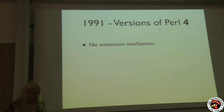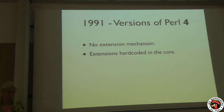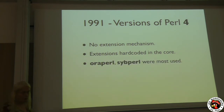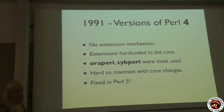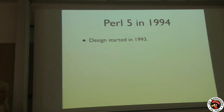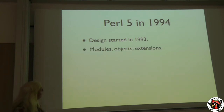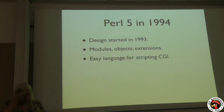People might argue that Perl 4 is actually Perl 3 with a book. But things got a bit heavier. Perl 4 didn't have any extension mechanism — all the extensions were mostly hard-coded in the core. So you got actually many Perls around: you got Oracle, CitePerl, for the database interfaces. It was really hard to maintain them, because any core change needed to be ported to all the other versions as well. This was fixed in Perl 5.